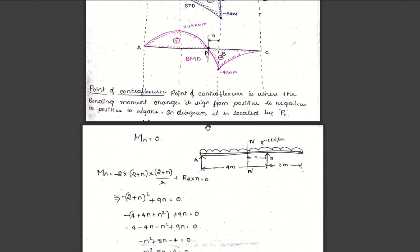Now we need to find out the point of contraflexure as given in the question. The point of contraflexure is the point where the bending moment changes its sign from positive to negative or from negative to positive. During this change, the bending moment passes through zero, and that point is called the point of contraflexure.